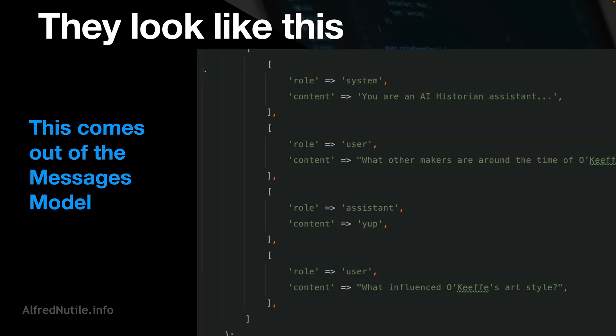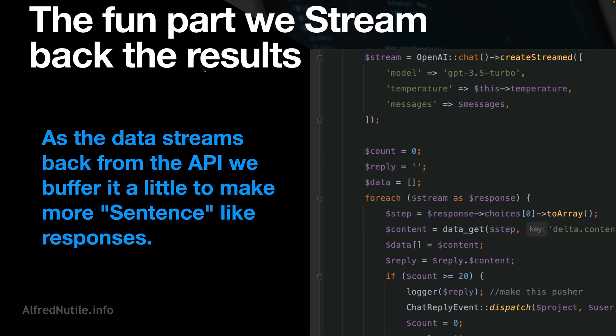This is what the messages look like by the time I send them to the API — role, role, role, role, and then all the content. We have to figure out how to trim that, how to send only enough back to give it enough context for a good answer and maintain history. The user can come back tomorrow and keep asking questions, or reset them all.